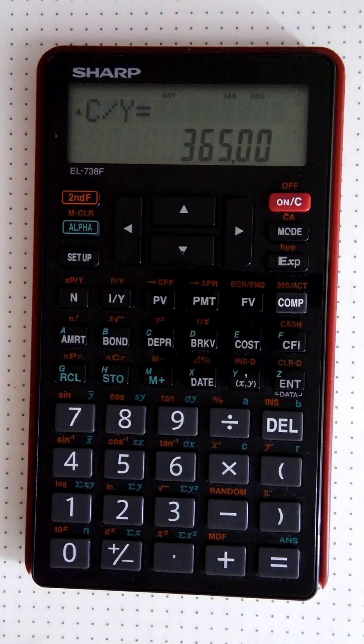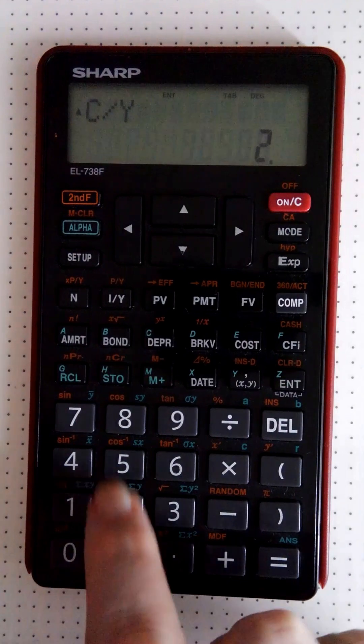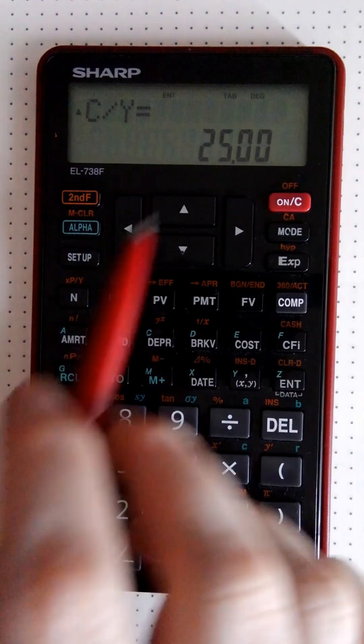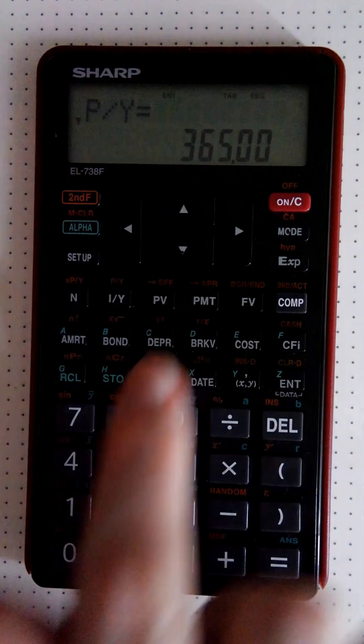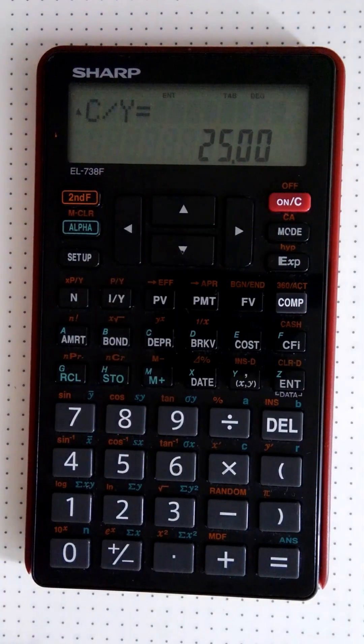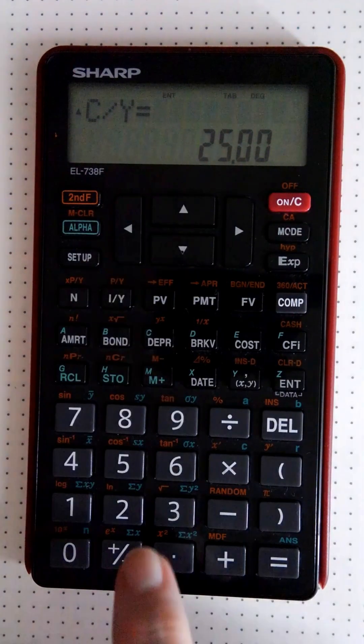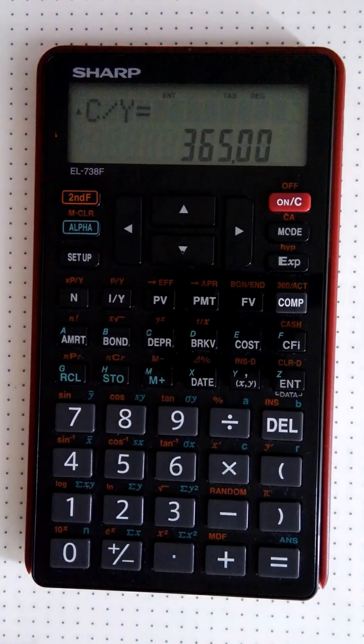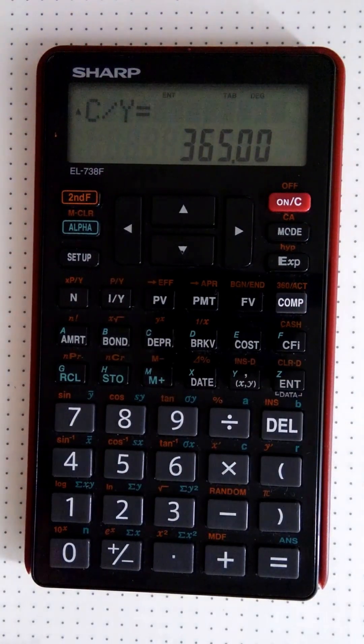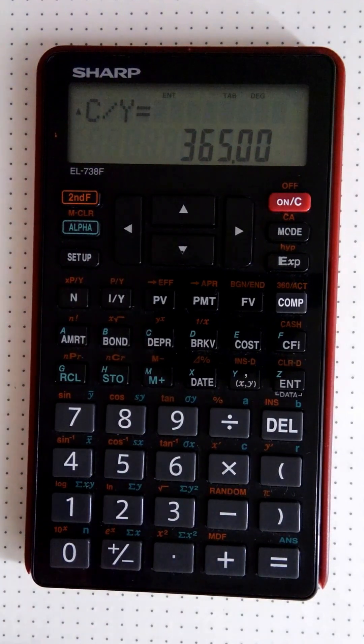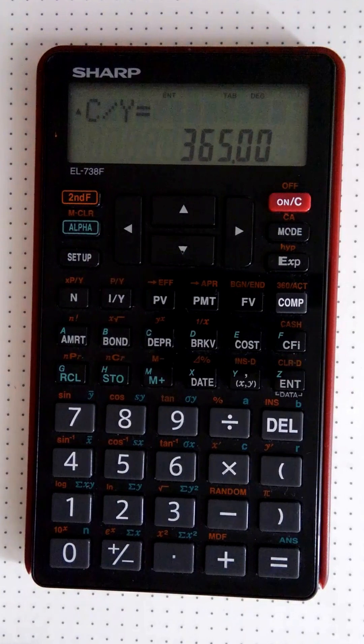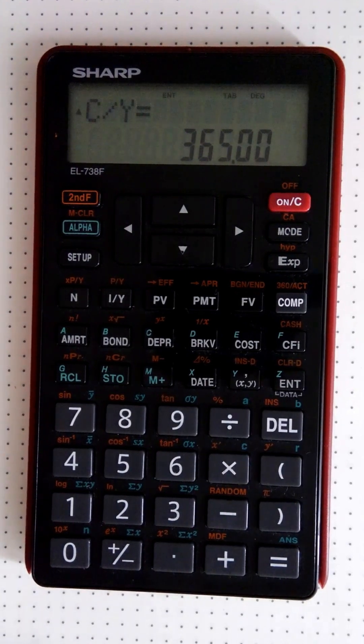But if we did want to change it, we would just say like 25 and enter, and we would change that. And we push up, you see your PY is 365 there, your CY is 25. We can change again, 365 enter, to have them corresponding with each other. So that's how we would input our payment periods, and we input our payment periods so that we can enter our compounding periods.